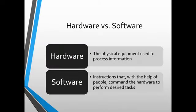Moving to the next slide, we have the definitions of computer hardware and computer software. What is hardware? Hardware is physical equipment used to process information. We are processing our data in the form of information using hardware equipment. Hardware refers to the physical, tangible components which we can touch and feel.